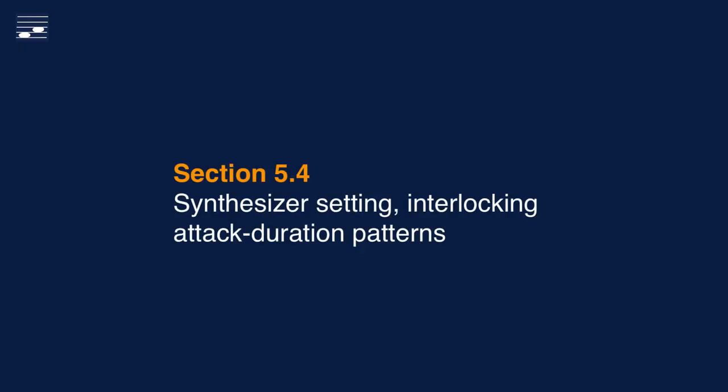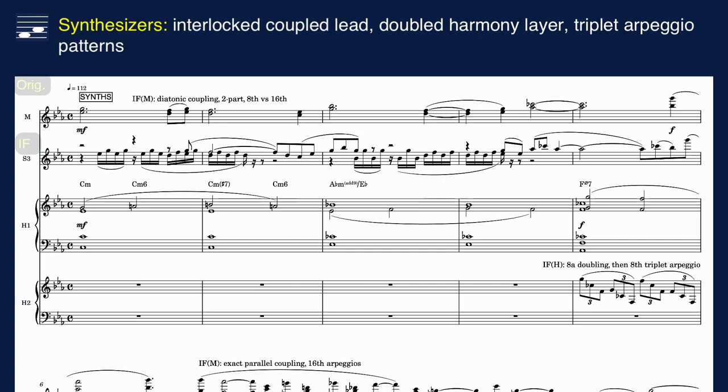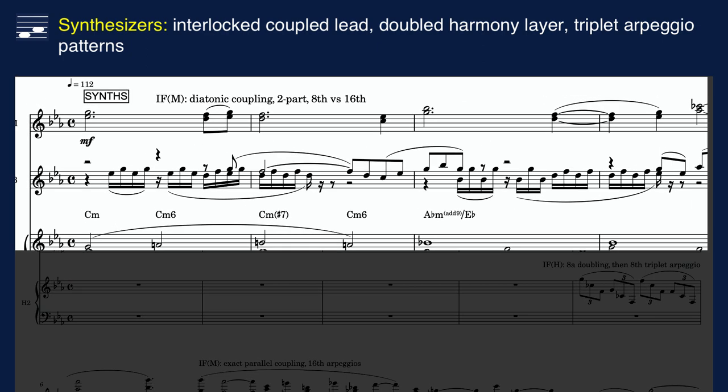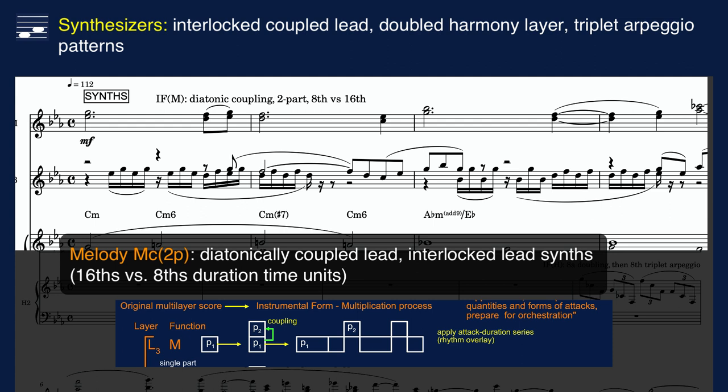The concept of attack multiplication and instrumental forms can also be applied to a setting with electronic instruments, as this final example will demonstrate. The diatonically coupled lead part is distributed over two interlocking synthesizers — one playing single part arpeggios at sixteenth-note time unit, the other using eighth notes.